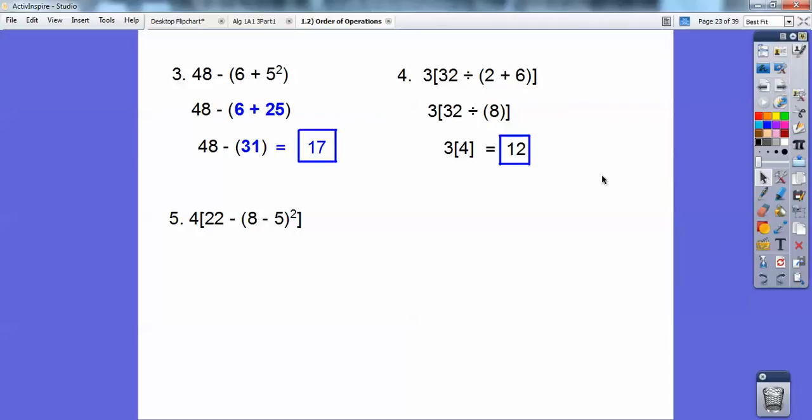Okay, how about this one? Same sort of thing here. I've got to do the 8 minus 5 first. I've got to do the parentheses first. 8 minus 5 is 3. Now inside of these parentheses I've got to do these exponents here. 3 squared is 9, and then 22 minus 9 is, last time I checked, was 13, so 4 times 13, 52.